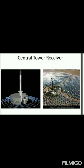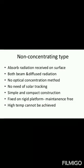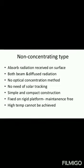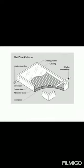The non-concentrating type collectors absorb radiation received on the surface — both beam and diffuse radiation — with no optical concentration method. Flat plate collectors are non-concentrating type. In the diagram, flat plate collectors are shown as box-sized devices with large element areas that collect solar energy. They require no solar tracking, have simple and compact construction, and are fixed rigid platforms, though high temperatures cannot be achieved.